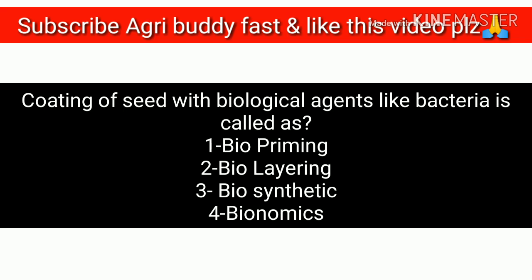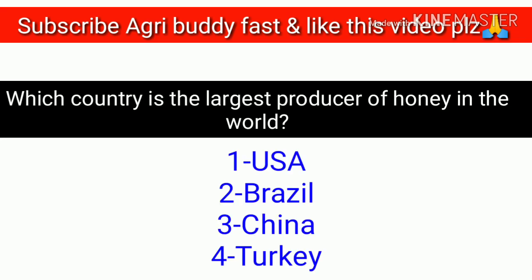Question 6: Coating of seed with biological agents like bacteria is called: option A - biopriming, option B - biolayering, option C - biosynthetic, option D - bionomics. The answer is option A, that is biopriming.